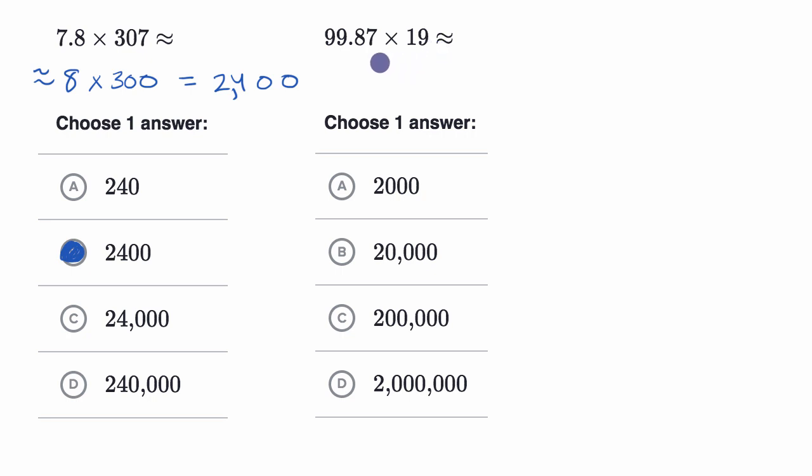All right. So once again, not easy to do this in your head, but this 99.87 is pretty close to 100 times, and I could multiply 100 times 19. That's actually not so difficult. So for example, I could say 100 times 19 is equal to 1900.